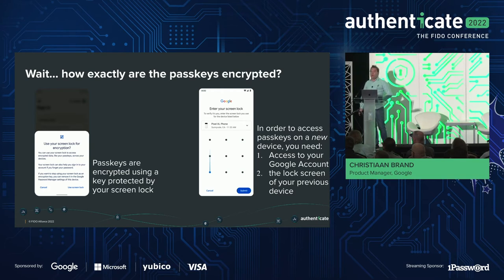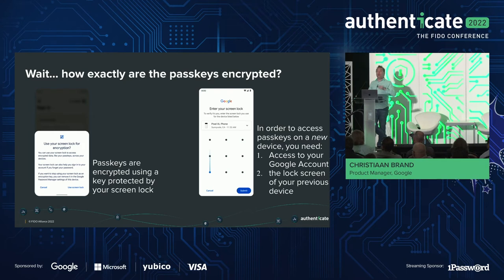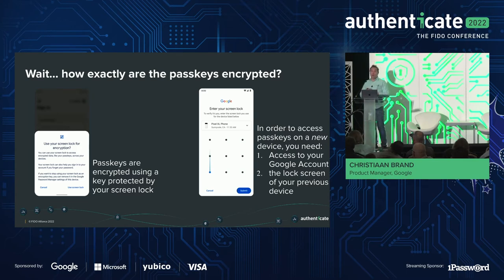The very first time you use or set up a passkey on a device, you'll see a consent screen. Passkeys are always end-to-end encrypted — the private key that lives on your device is E2E encrypted and then stored in the Google Cloud. We can't see it. When you need to use it on a different device, you decrypt the passkey locally. The key used for encryption and decryption is based on the user's screen lock — whatever pin, pattern, or password you have set up is used to unlock the master key that does the encryption for passkeys.